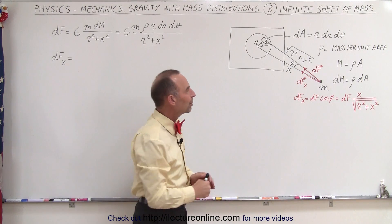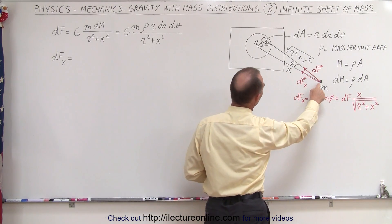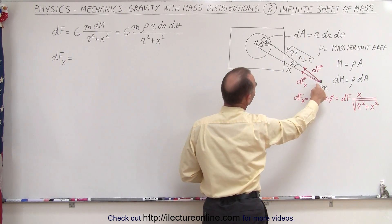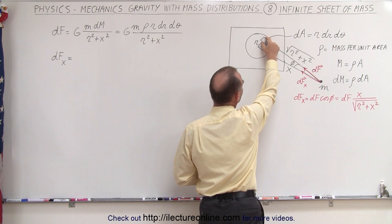Everything else is the same as the previous videos. The distance from m to the sheet is x. Assume this line to be perpendicular to the surface. Then we take a small little element right here, dA.